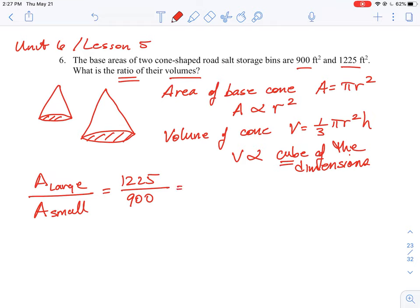We could reduce this down to a fraction—take out a GCF and you should see that it comes out to 49 over 36. So that is the ratio of the two objects.